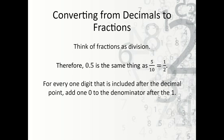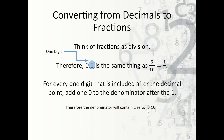For every one digit included after the decimal point, add one zero to the denominator after the one. There's one number after the decimal point, so I know I'm going to have one zero — so my denominator would be ten. Then I place this digit over the denominator, so it'll be five over ten.